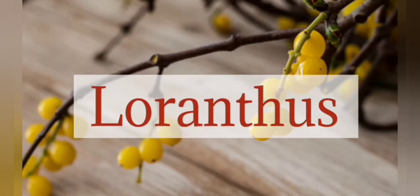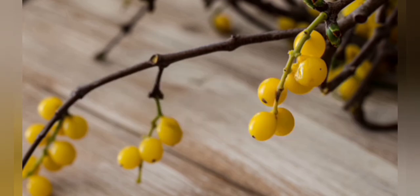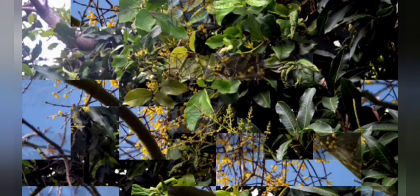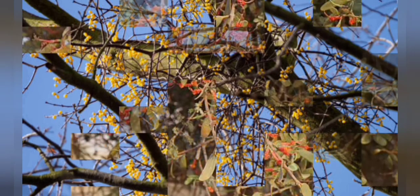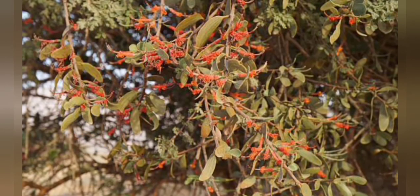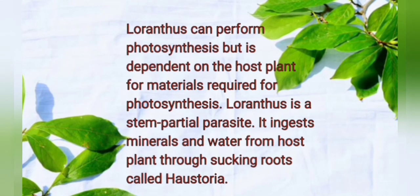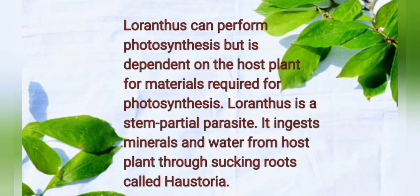Loranthus is also a partially parasitic plant. These plants have green leaves and make their own food, but also depend on a host plant for nutrition and water. They get enough nutrition and water from the host plant and use that to carry out photosynthesis. Loranthus can perform photosynthesis but depends on the host plant for the raw materials required, which it absorbs using roots called haustoria.